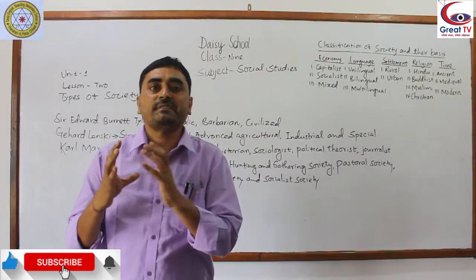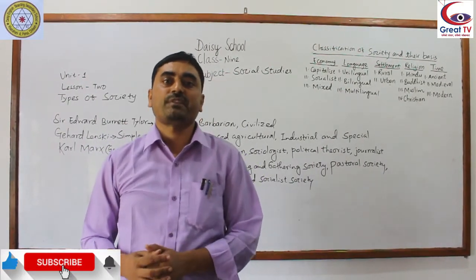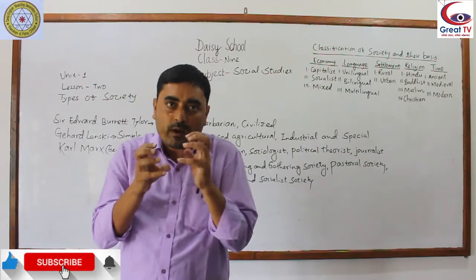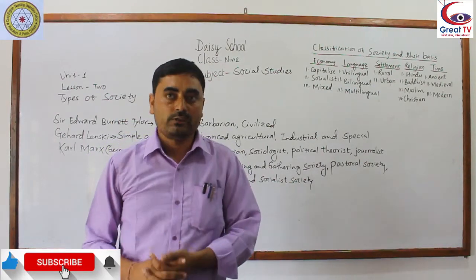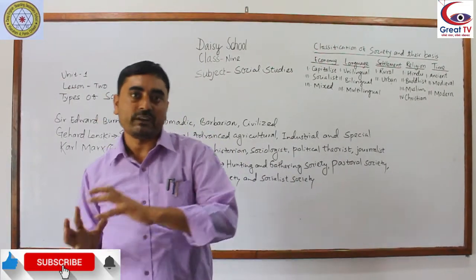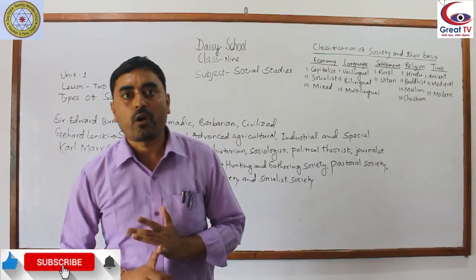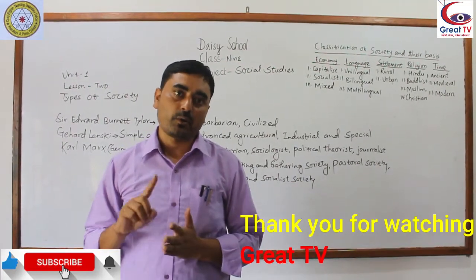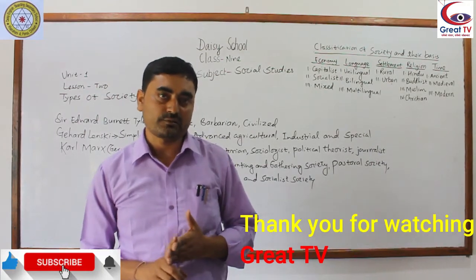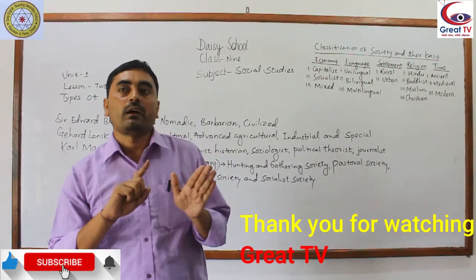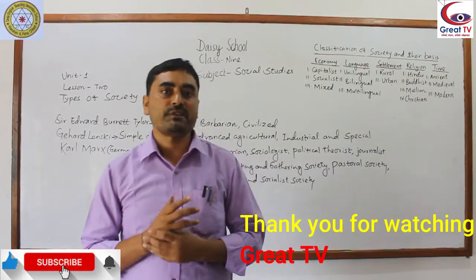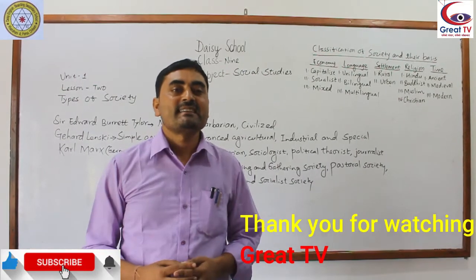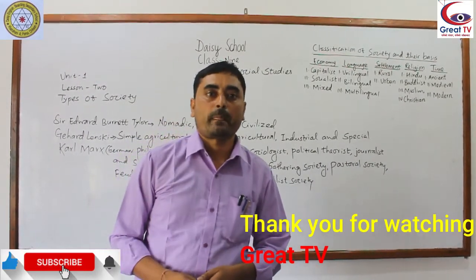Apart from all these, there is another classification of society to be studied in detail in our course. On the basis of subsistence strategy — the means, methods, and techniques people use for their survival — society can be divided into six types: number one, hunting and gathering society; number two, pastoral society; number three, horticultural society; number four, agrarian or agricultural society; number five, industrial society; and number six, post-industrial society. We will learn in detail about these six types of societies in the next video.